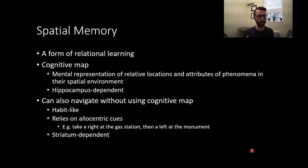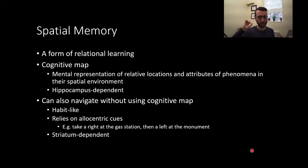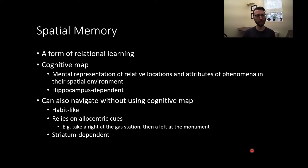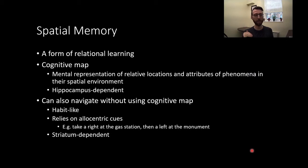A cognitive map is sort of like being able to picture your environment — knowing a place is northwest of where you are now, so here are some routes you could take to get there. Whereas a non-cognitive map strategy, a response-type strategy, is really just knowing a route and not knowing much about the information in space — just knowing a series of responses you must make when you see various cues.